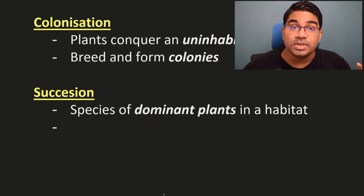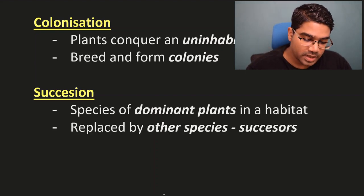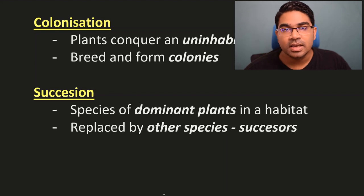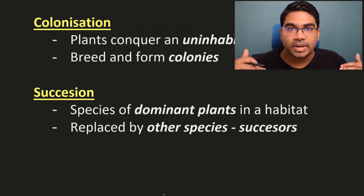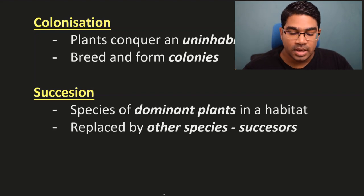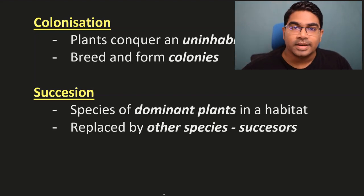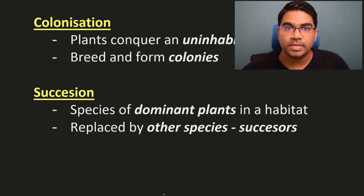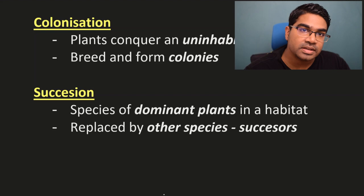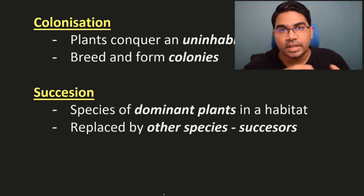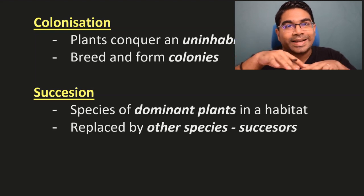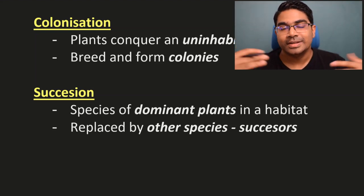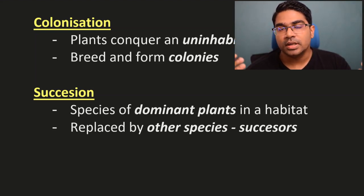This pioneer species is then replaced by other species, called successors. Successors take the place of the dominant species, and this keeps happening again and again. There will be new dominant species each time succession takes place. After the successor replaces the initial species, it becomes the new dominant species. This continues until a climax community is reached, which is normally a forest.